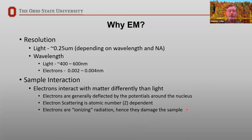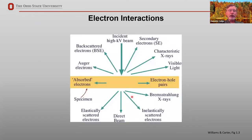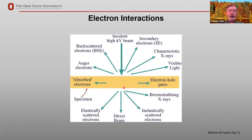As electrons strike the sample, a number of things can happen. Your beam can generate secondary electrons, backscattered electrons, and characteristic X-rays — all of which you look at in the SEM. You can also get visible light generating cathodoluminescence, and Auger electrons for surface analysis. For TEM, we're primarily interested in what is transmitted through the sample: elastically scattered electrons for imaging, inelastically scattered electrons for EELS analysis, and characteristic X-rays for EDX analysis — similar to the SEM but at higher spatial resolution.